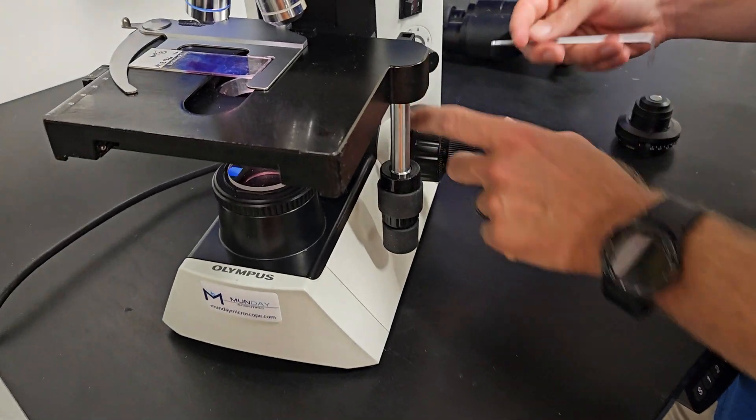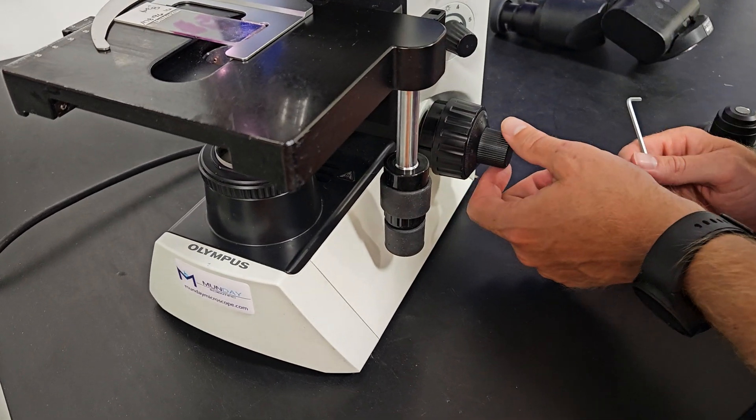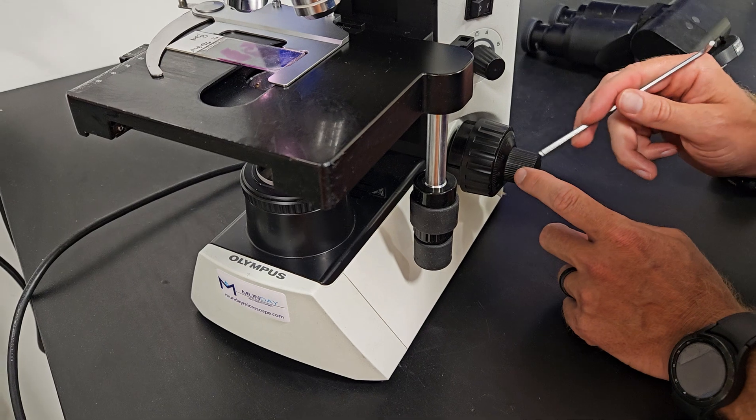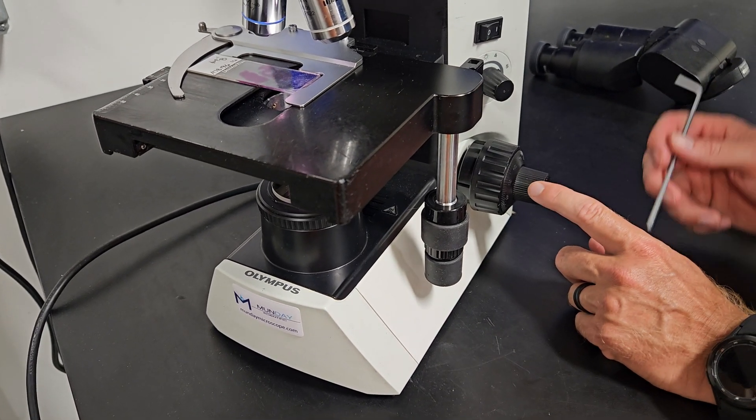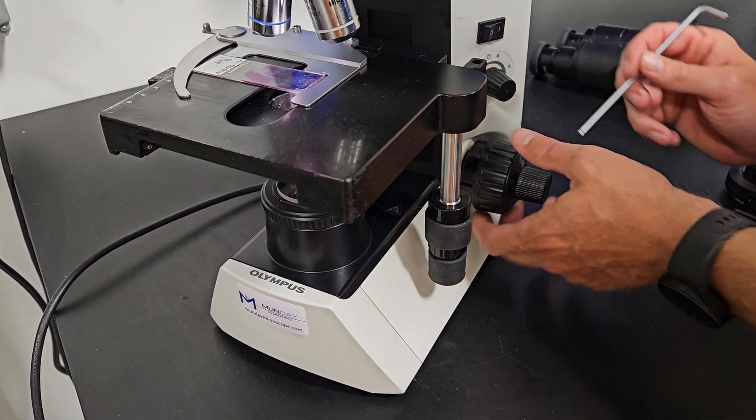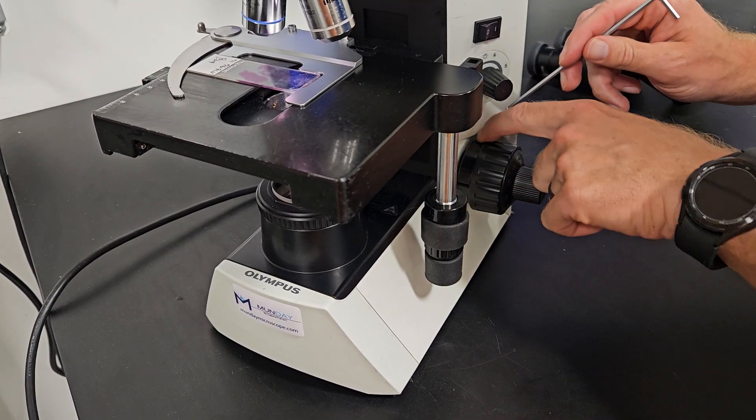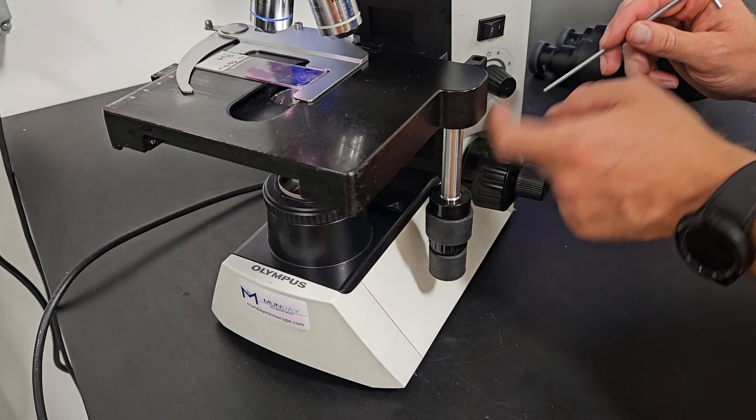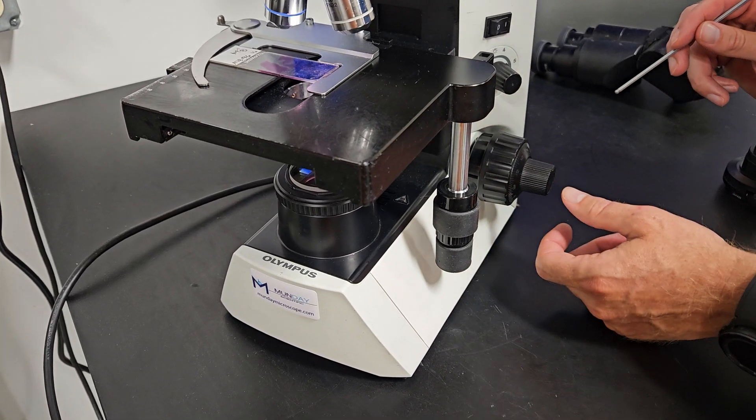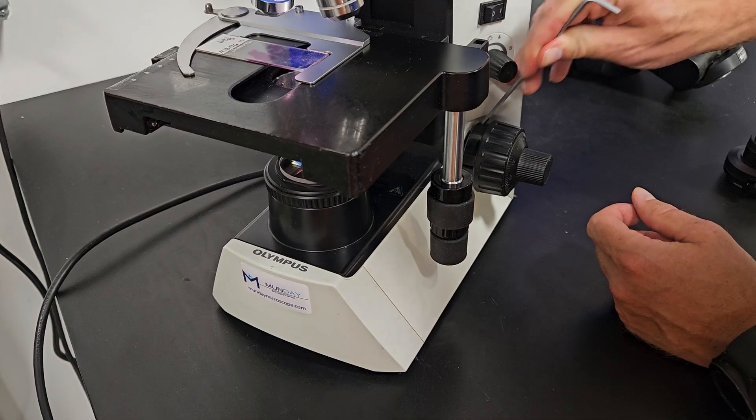Right here is your tension ring. If you ever notice the microscope moving, this fine focus knob moving without you touching it, it's likely that the tension has been accidentally backed off. You just put a flathead screwdriver or a wrench in this notch right here and turn it towards the wall and it'll correct that issue.